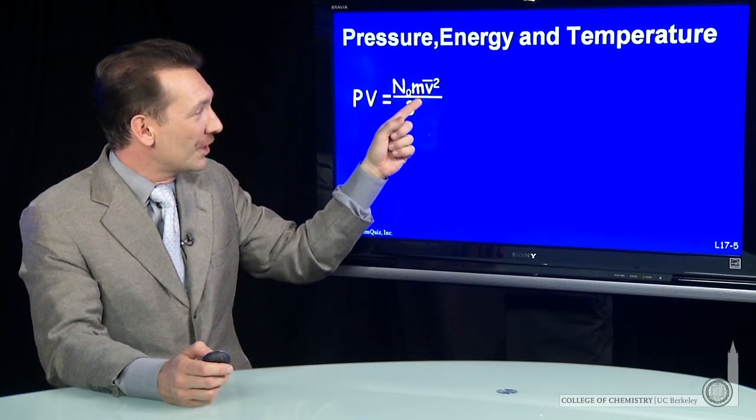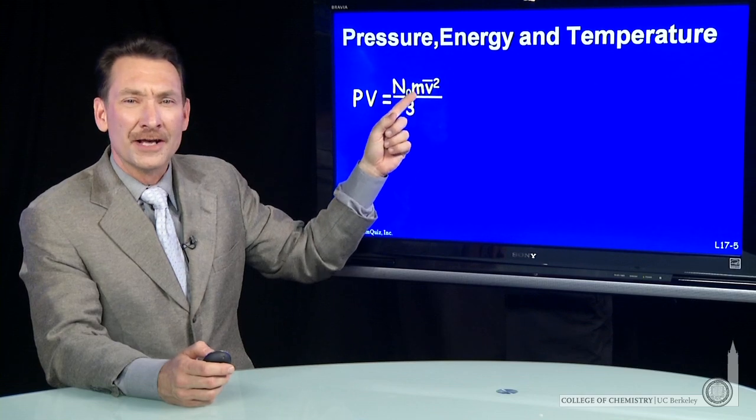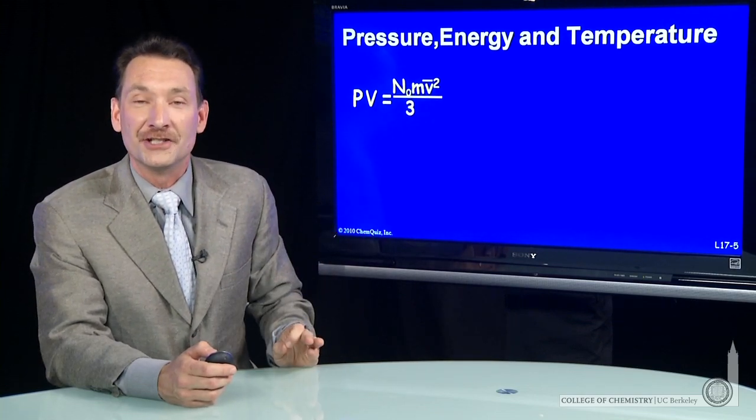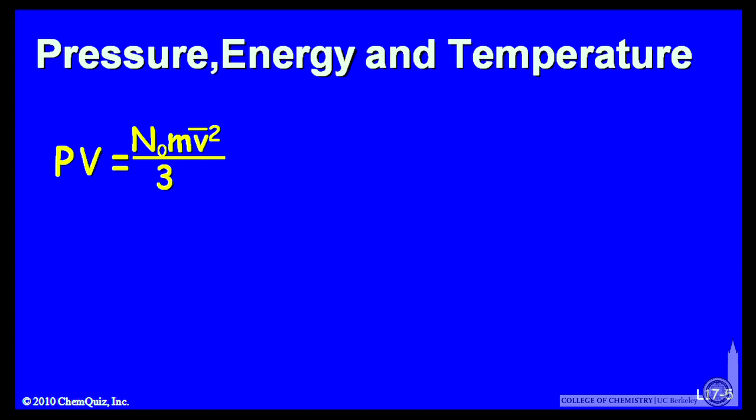And I'm going to look here at mv squared. I know that one half mv squared is the kinetic energy. So I'm going to multiply and divide through here by 2 to get a factor of one half mv squared.